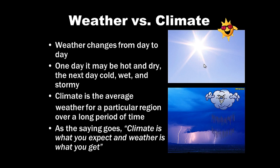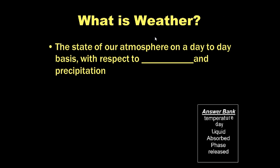Weather versus climate. Weather changes from day to day. One day it may be hot and dry, the next day cold, wet, and stormy. Climate is the average weather for a particular region over a long period of time. As the saying goes, climate is what you expect and weather is what you get, because it's day to day.